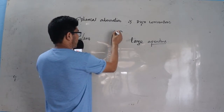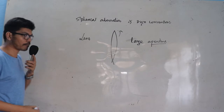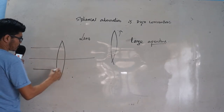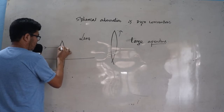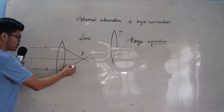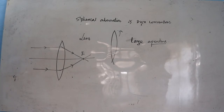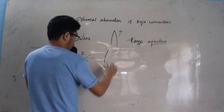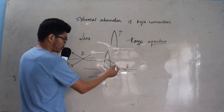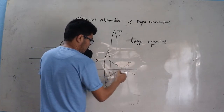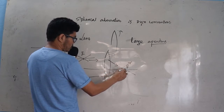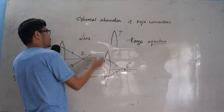When the lens becomes bigger in size, the lens starts having a problem. This is the lens, this is the principal axis, and these are the rays falling on the lens. Actually all the refracted rays should be meeting at the point we call as the focus. But when the lens becomes bigger in size, the refracted rays are not able to meet at the focus.